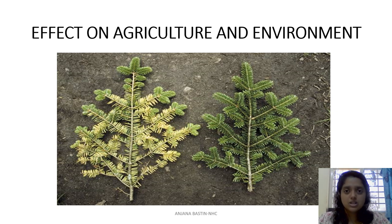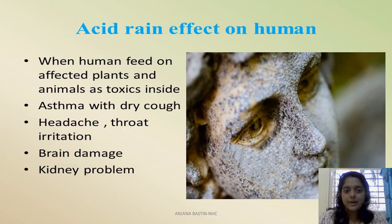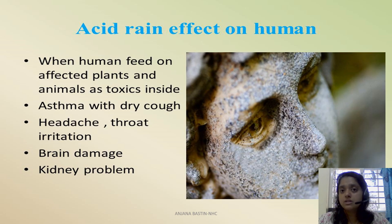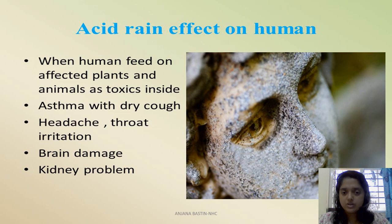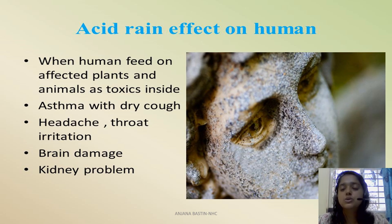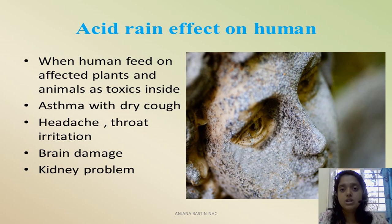Humans who feed on plants and animals affected by acid rain have toxins building up inside them. This can result in asthma — not genetic asthma but one caused by the external environment — headache, throat irritation, brain damage, and kidney problems as well, when you consume water contaminated by acid rain. This is also the effect on structures, such as the ongoing depletion affecting the Taj Mahal in Agra.